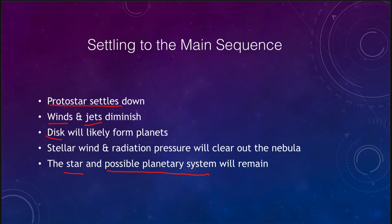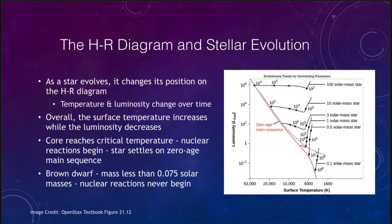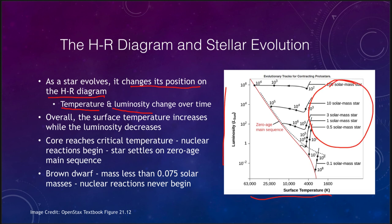We can also look at stellar formation using the HR diagram. As a star changes its temperature and luminosity, it will change its position on the HR diagram. For a protostar that is collapsing, the tracks are slightly different depending on the mass. They all start up in the upper right-hand side of the diagram, which also contains red giant stars.